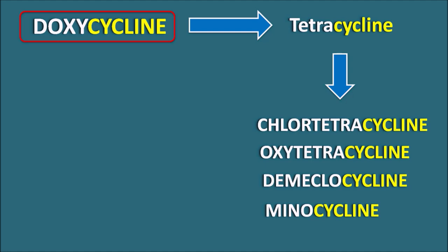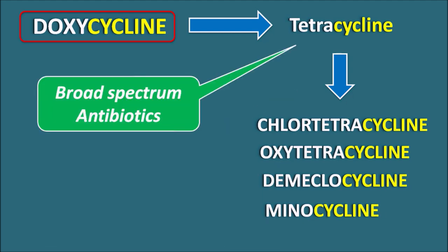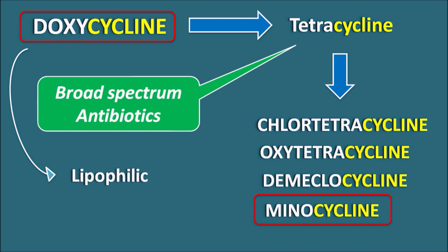All these drugs end with the suffix 'cycline,' indicating they are tetracyclines. Tetracyclines are broad spectrum antibiotics, meaning they are effective against a number of bacterial infections. These drugs act as bacteriostatic and inhibit the growth of bacteria. Among these drugs, doxycycline and minocycline are both lipophilic in nature, so they have better absorption and can even enter into the CNS.